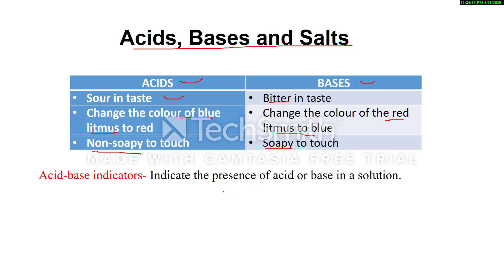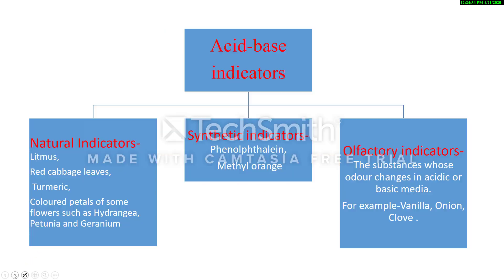There are some substances from which we can find out whether a given substance is acidic or basic. These are known as acid-base indicators, or simply indicators. These are substances which indicate the presence of acid or base in a solution. Acid-base indicators can be classified into three categories: natural indicators, synthetic indicators, and olfactory indicators.